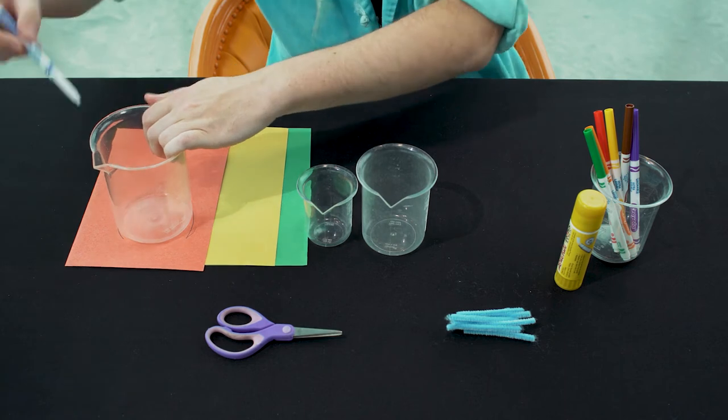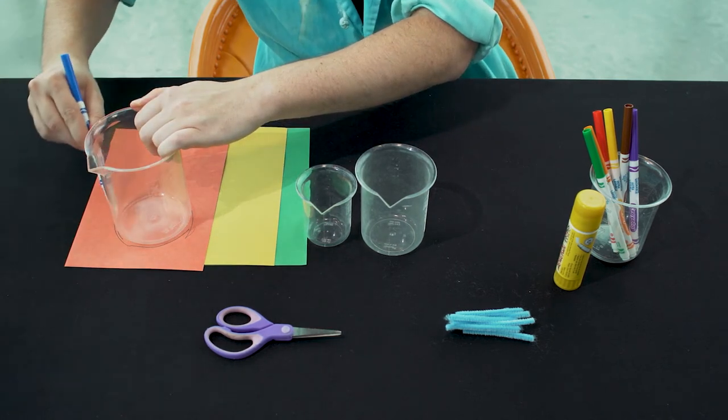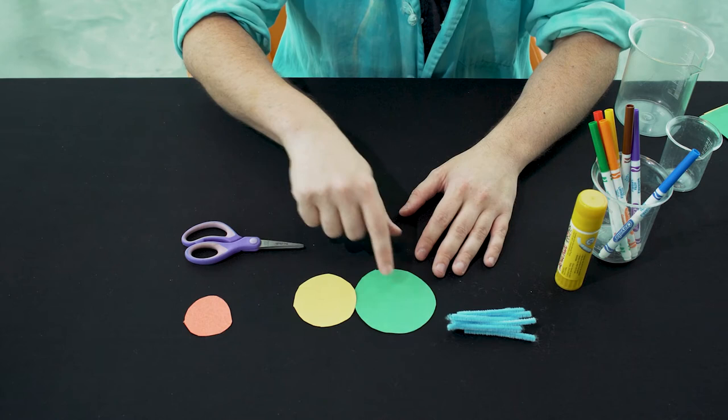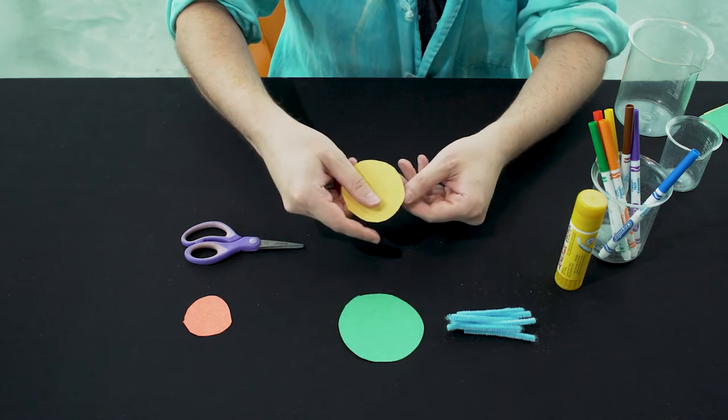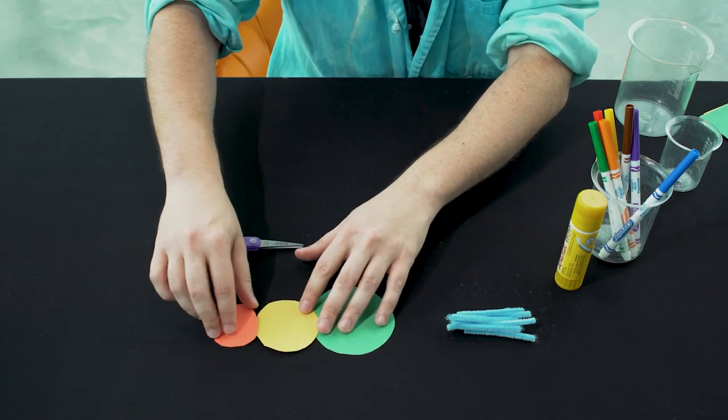And again, this may be something you want a little help from a grown-up. Next, you'll want to take your scissors and cut around those circles that you traced.